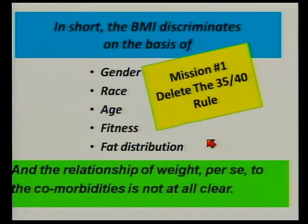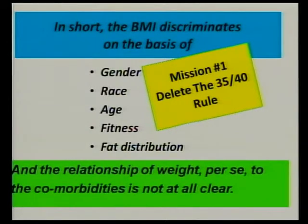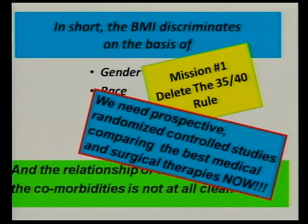So the first mission is we need to delete the 35-40 rule. But we've got to come up with something better, because we don't want to throw out the baby with the bathwater. We'll probably have to do something like the BMI plus adding comorbidities, racial factors — just like a Glasgow scale or an APGAR scale. And we need this quickly, through prospective, randomized, controlled studies that compare the best medical and surgical therapies.